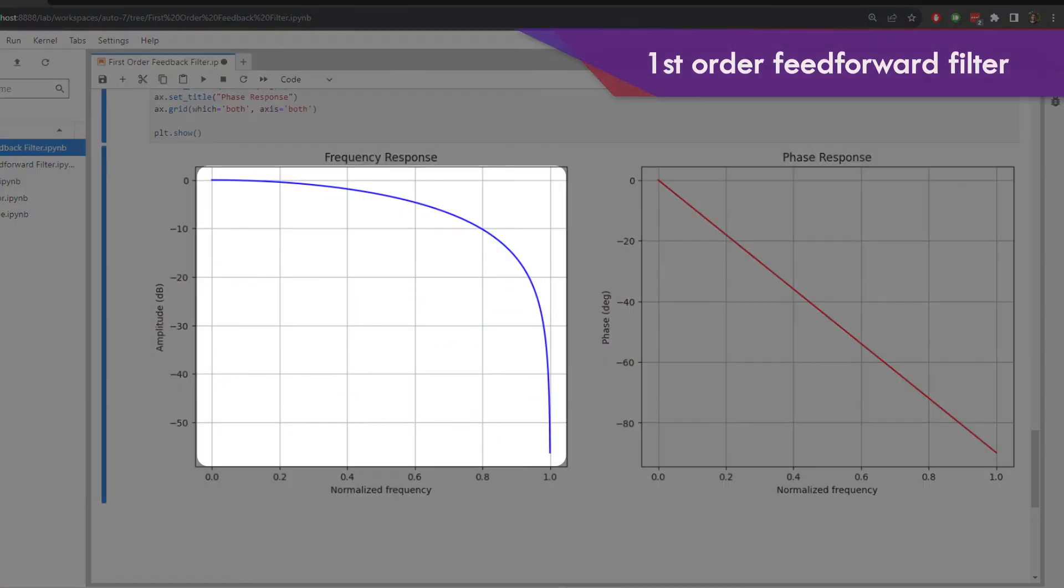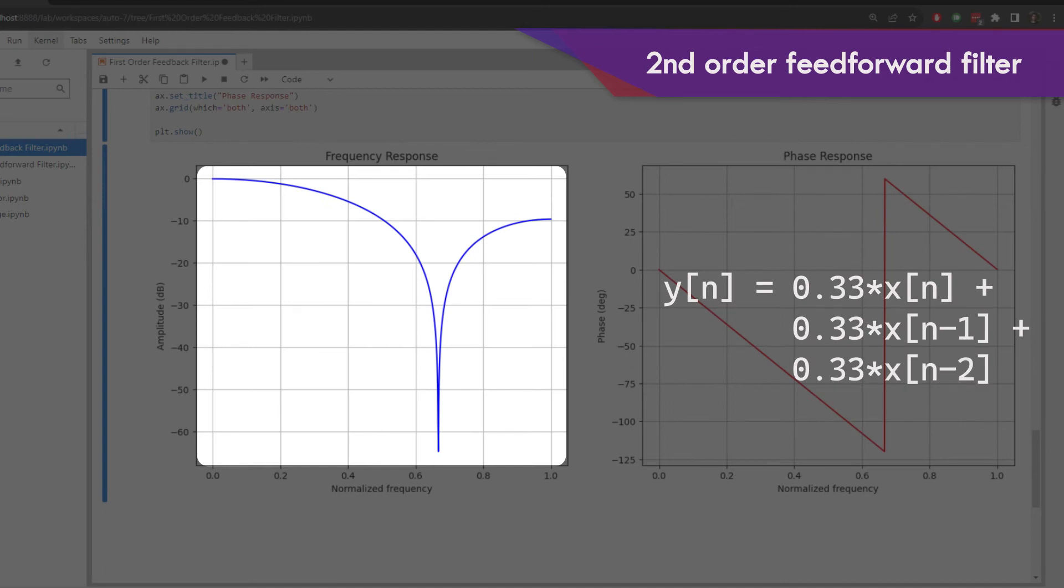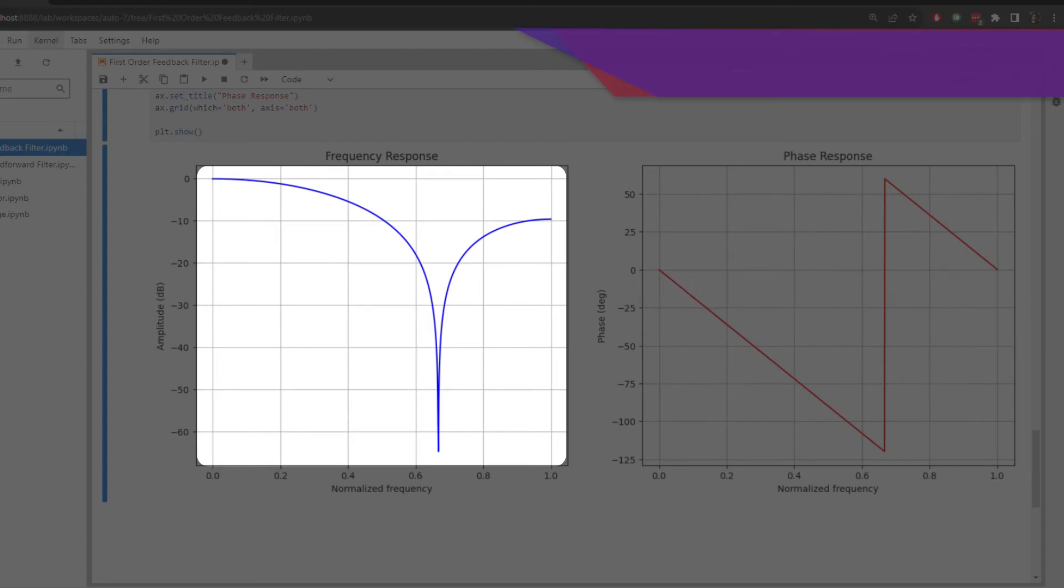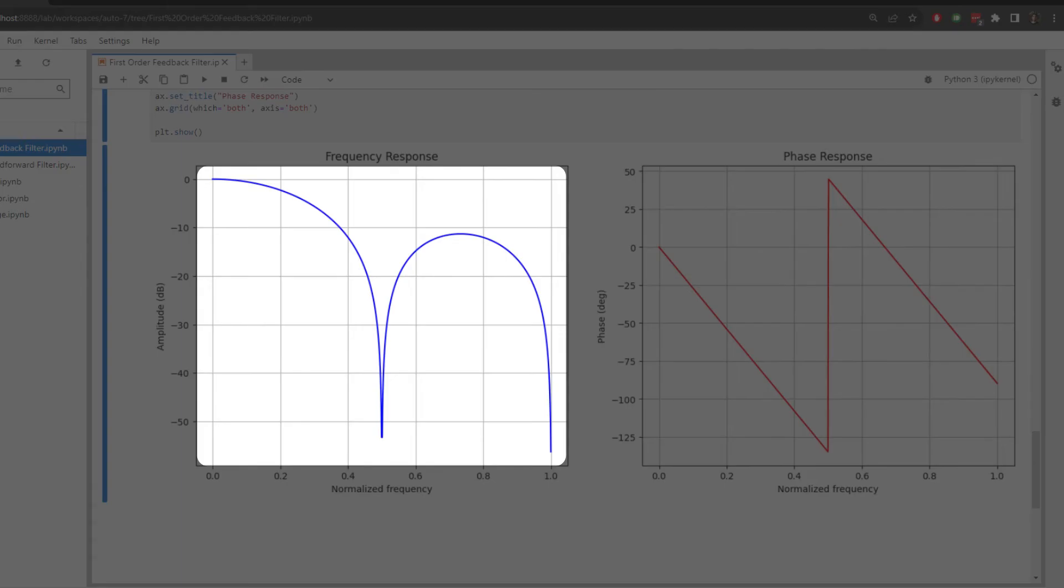This is a first order feedforward filter, and it has exactly one zero, and this is sometimes called a one zero filter. Our second order feedforward filter has two zeros, but one of them is a complex conjugate of the other, so it's not really considered nor representable within this frequency response plot. So you can think about it as being the same or superimposed or whatever. This third order feedforward filter has three zeros, but only two are representable on this plot.